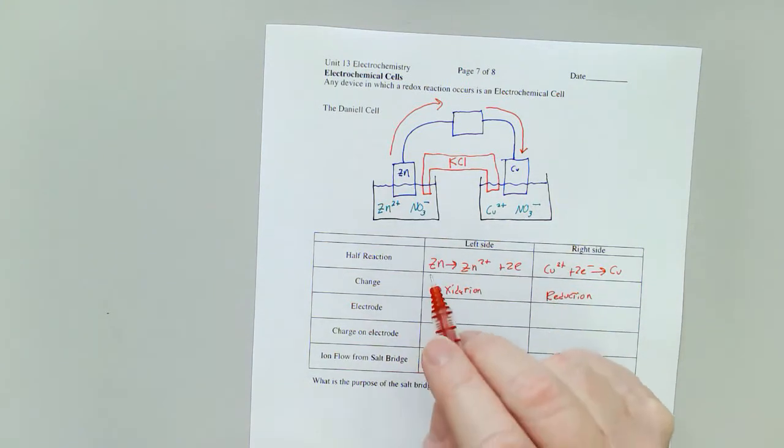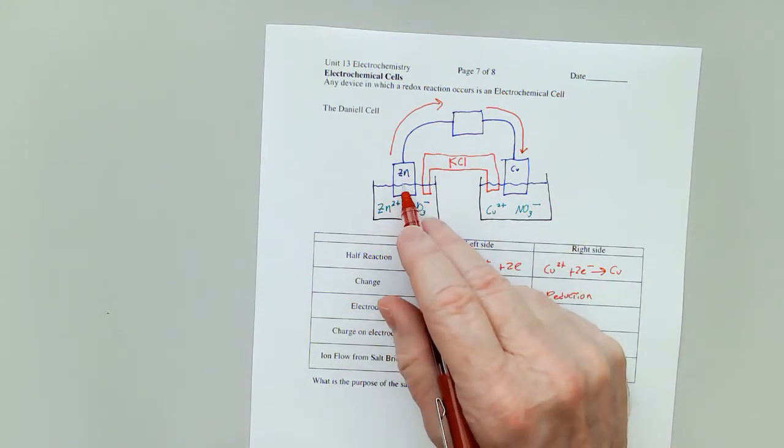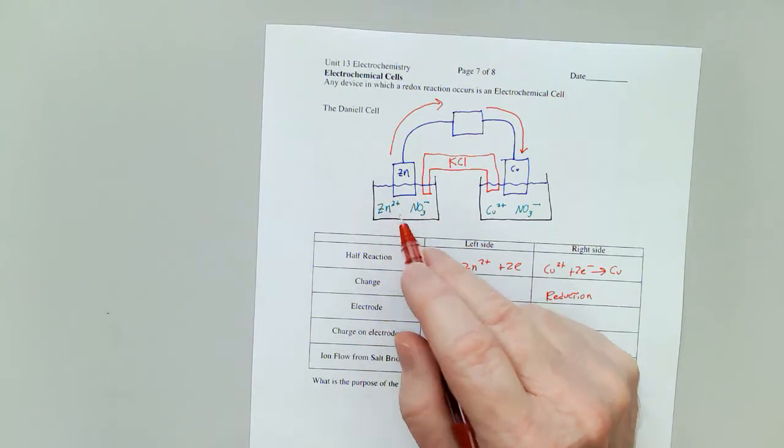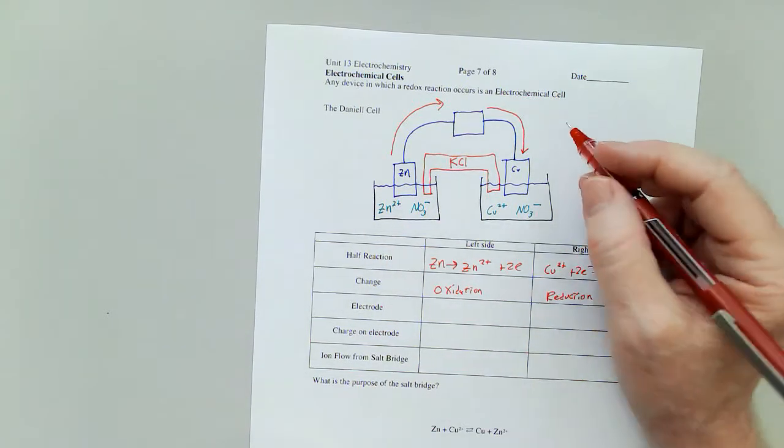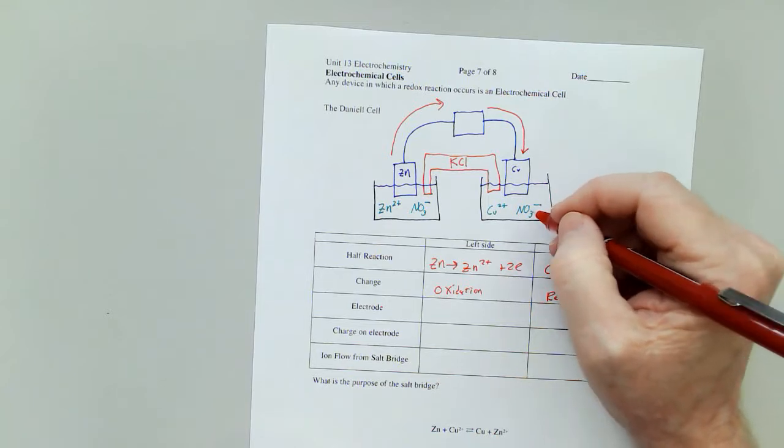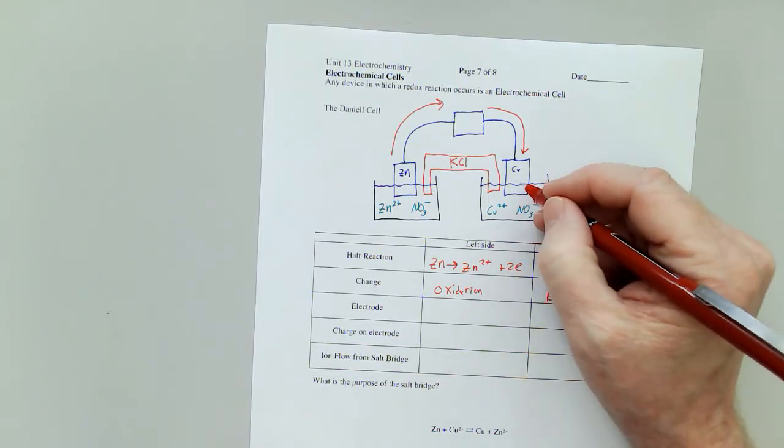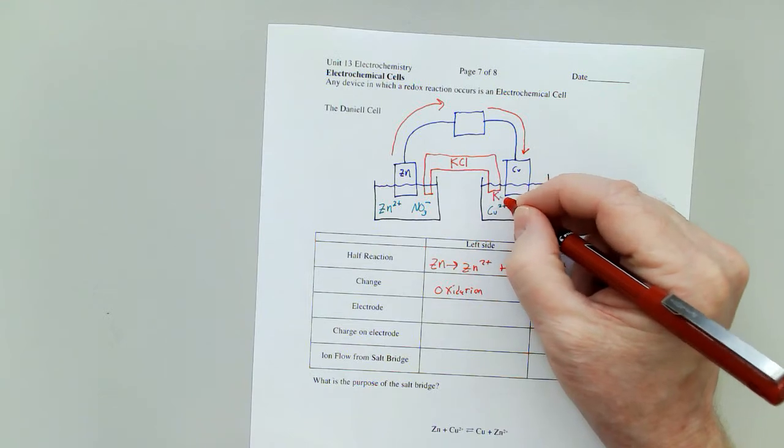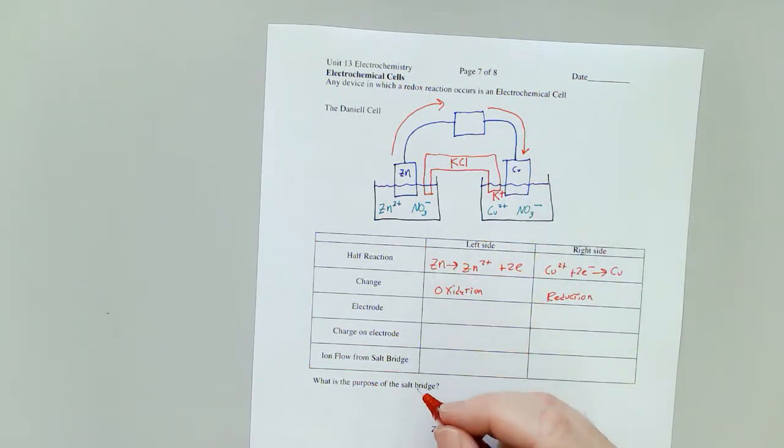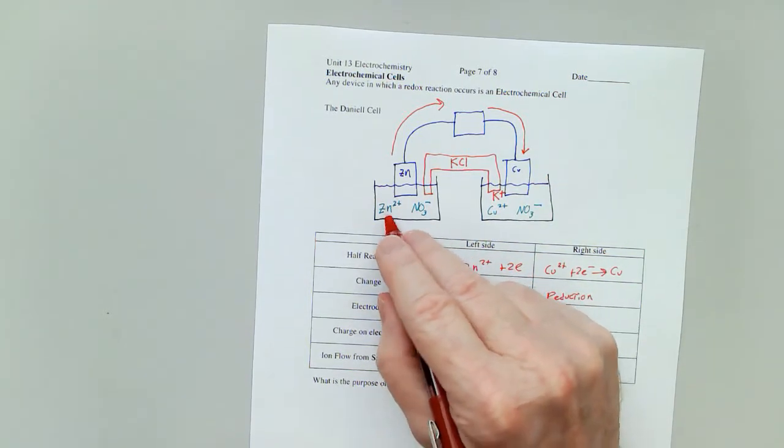This one shrinks because little pieces of zinc as zinc 2 plus ion fall off into the solution. Now that means that we're going to have an excess of nitrate ions over here because the copper is going up over there.